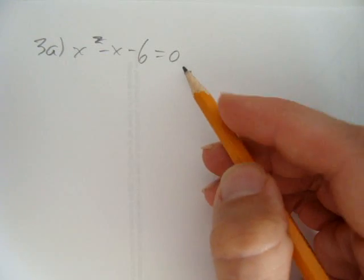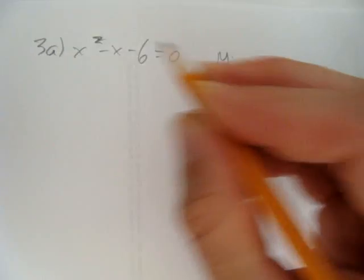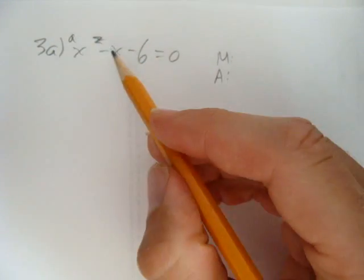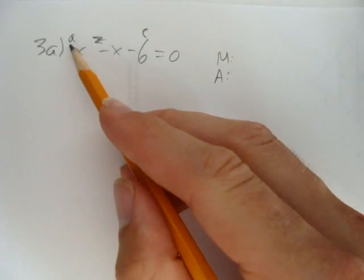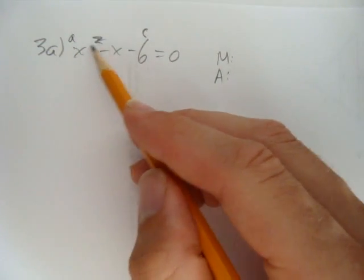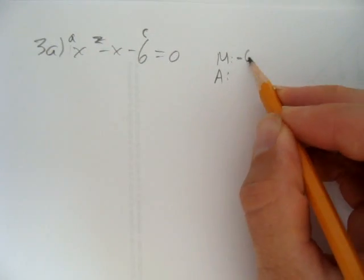In an equation equals 0, I can solve it by factoring. And what I'm looking for is first, what multiplies to the coefficient of the x squared term times the c term? When there's no number here, it's understood in front of the x squared that we have a 1, so you just go 1 times negative 6, that's negative 6.